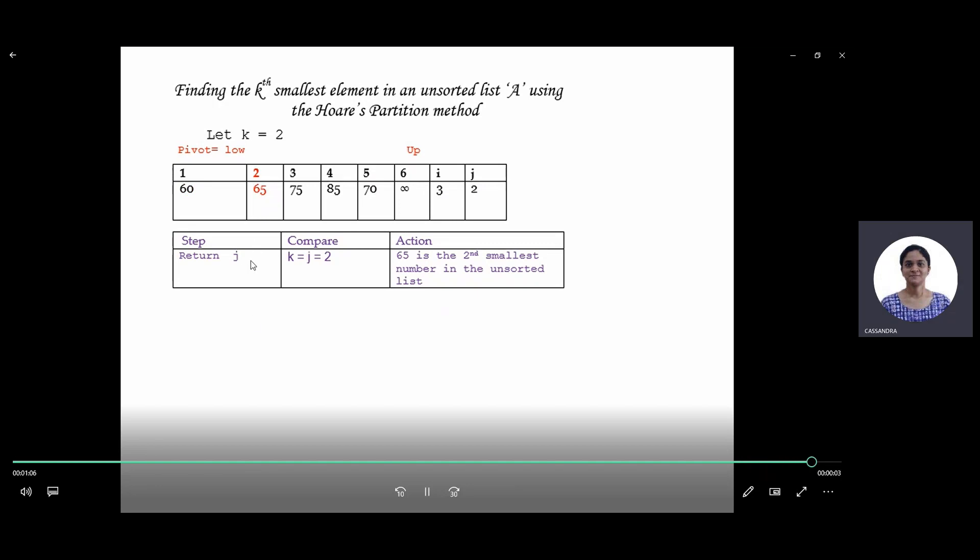Now here at value j, we return this to the algorithm, which checks if that was the k-th smallest element we had to find. Since it is the value of k, we stop and announce that 65 is the second smallest number in the unsorted list.